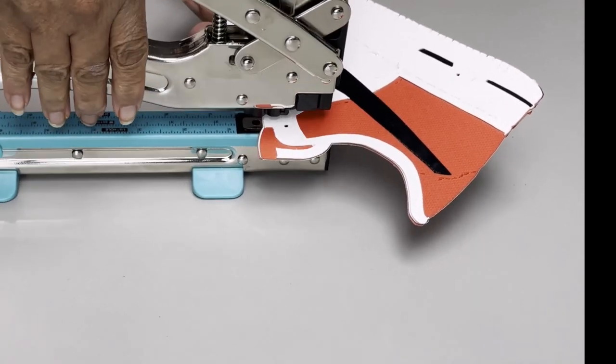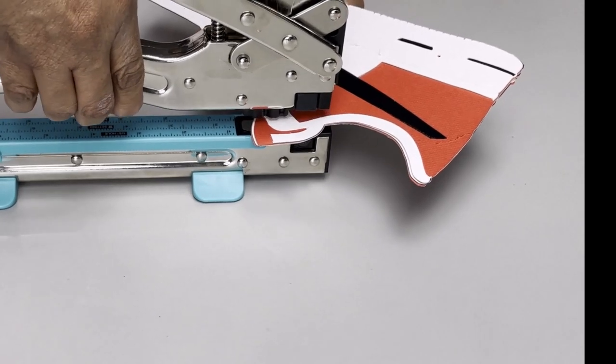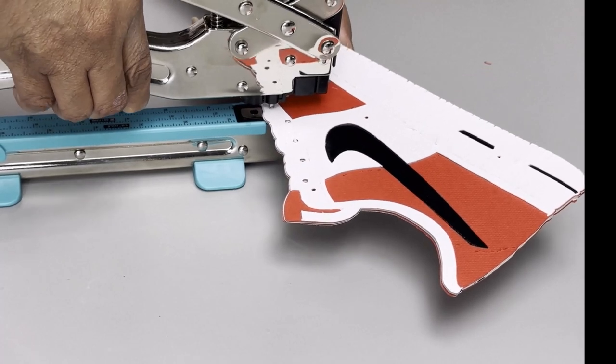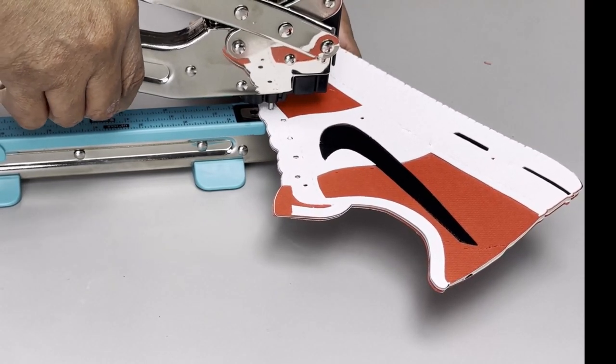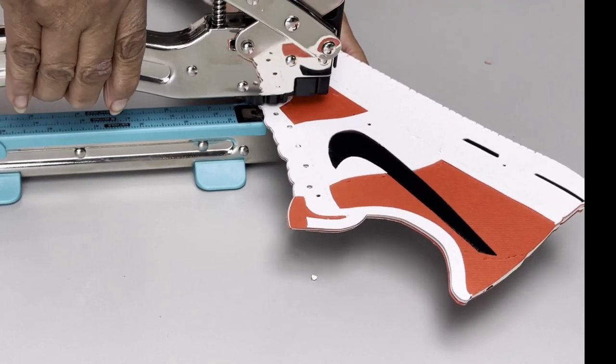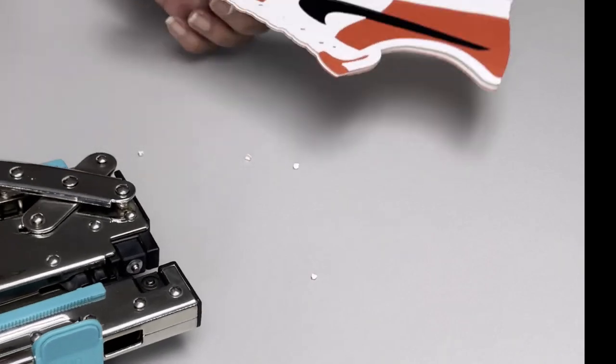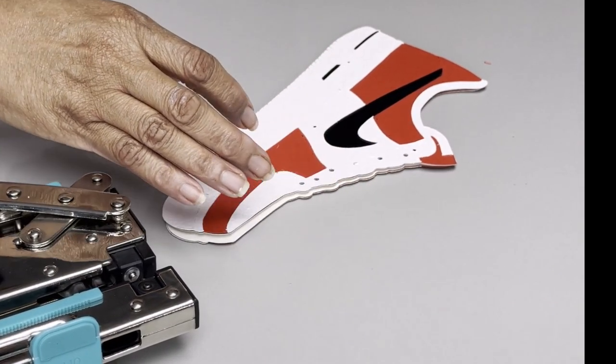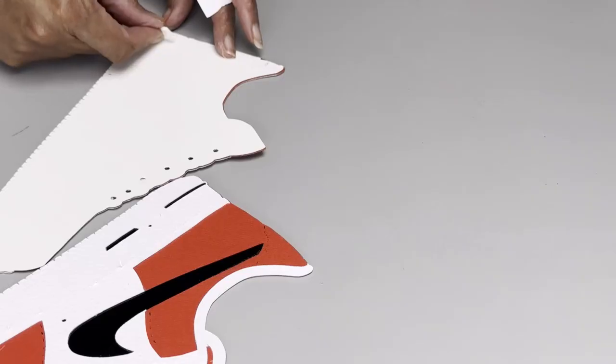You've probably seen this for fabrics and materials. But this tool, the Crop-A-Dile, has multi-functions. It actually puts the hole into paper also. If you're doing a grommet and you want it to adhere to something, it will do that as well. That's why I like this tool. This can be found on my Amazon shop as well, and that is a good tool.